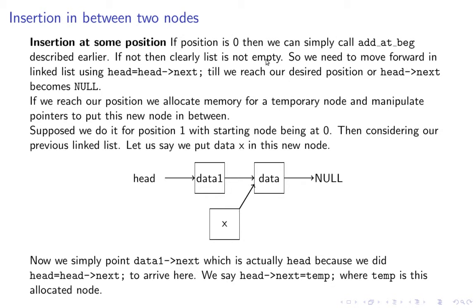So what we do is move forward in the linked list using head = head->next until we reach our desired position or head->next becomes null. Now what this means is if we say head = head->next, and then again head = head->next, and we are becoming null here, so head is actually pointing here and head->next becomes null. In this case, we cannot add at the final position.